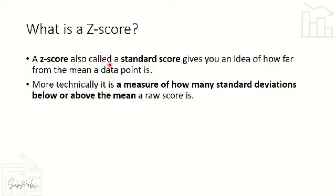Now let's have the definition of the z-score. The z-score is also called a standard score that gives us the idea of how far from the mean a data point is. More technically, it is a measure of how many standard deviations below or above the mean a raw score is — showing how far, and whether higher or lower than the mean, our given scores are.